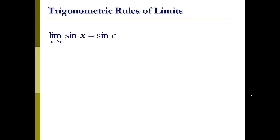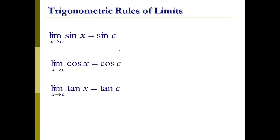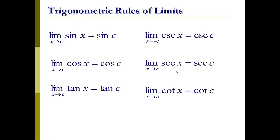There are analytic rules for trigonometric functions as well. The limit of sine of x as x approaches c is equal to the sine of c. The same is true for the cosine function: the limit of cosine of x as x approaches c is equal to the cosine of c. So we're substituting the value c everywhere we see x. This also works for the tangent function and the co-functions — cosecant, secant, and cotangent — as long as the function has a value at that point. For example, the tangent of pi over 2 is undefined, so we couldn't evaluate this limit at pi over 2.